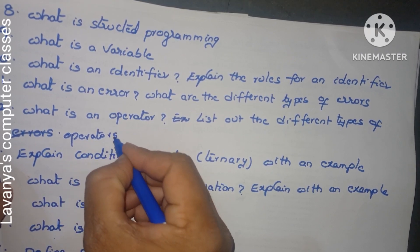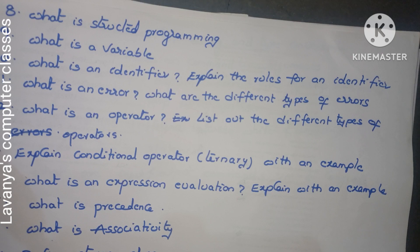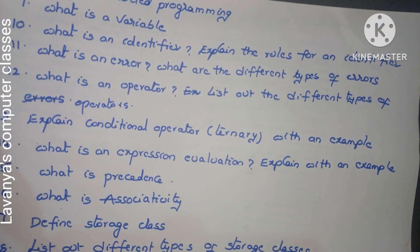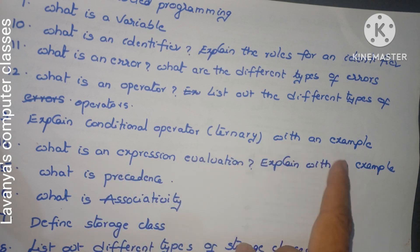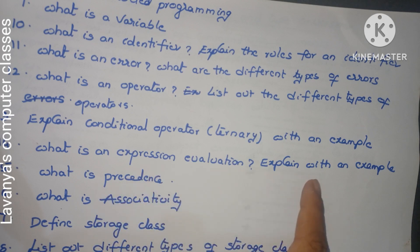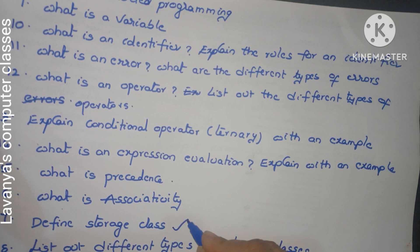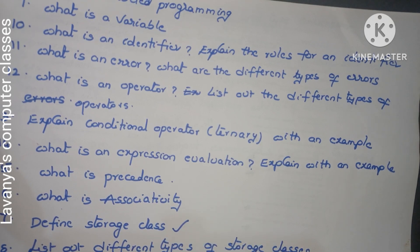The operators question is also suitable as an SI-type question. If you just mention the types — arithmetic operators, logical operators — and give a list, that is sufficient for a short answer question. If you elaborately explain what an operator is and how it works, that comes under an SI-type question. Next: explain the conditional operator, that is the ternary operator, with an example — very important question. Next: what is expression evaluation? Explain with an example. What is precedence? What is associativity? Define storage class — this is a very important question for SI or short answer.